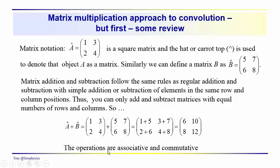These operations are associative and commutative. Associative means that with three terms A plus B plus C, grouping B plus C first gives the same result as grouping A plus B first. Commutative means that B plus A gives the same answer as A plus B.